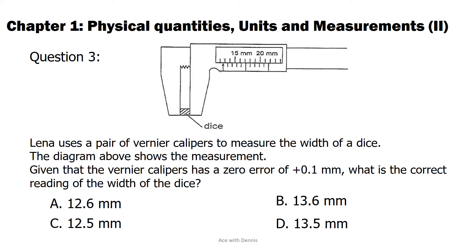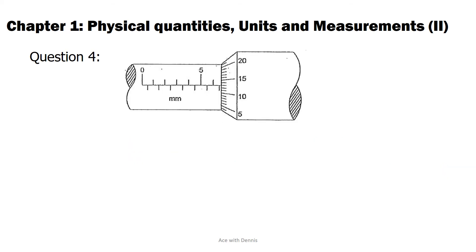The answer is C. 12.5 millimeters. Make sure you know how to take the reading from Vernier Calipers. You can refer back Vernier Calipers topic if you have forgotten how take reading from Vernier Calipers.